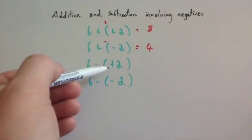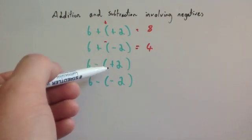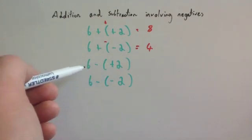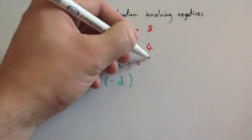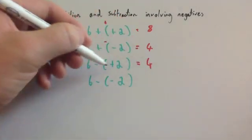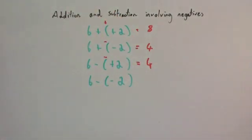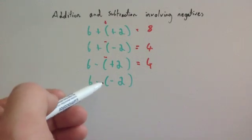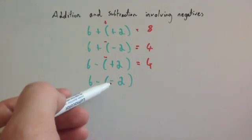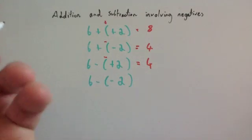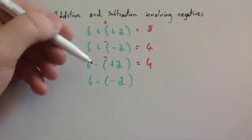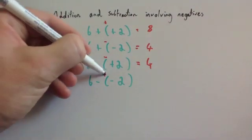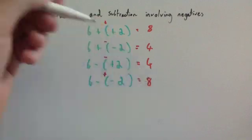6 take away a positive 2 — I would just say 6 take away 2, and 6 take away 2 is 4, like normal, whenever you just take away a positive number. And finally, whenever you subtract a negative number, subtracting a minus will actually mean that you're going to add it. So you're going to do 6 plus 2, and 6 plus 2 is 8.